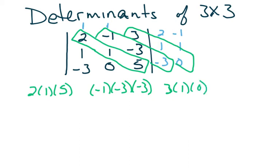Because all of these diagonals are going in the same direction, we add those products together. Doing the math: 2 times 1 times 5 is 10. Three negatives — an odd number of negatives — gives us minus 9. And then we have that 0, so that's nice. The result here is just going to be 1.